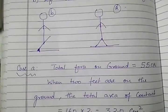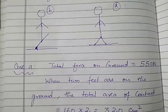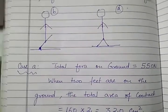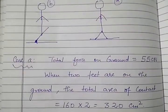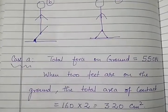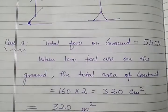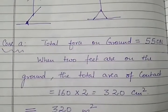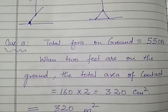When two feet are in contact the total area of contact would be the area of contact of one foot into two. So that is 160 into two that is 320 centimeters squared.